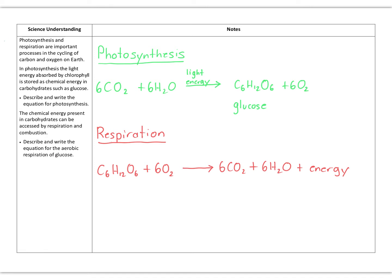Hopefully you've all learnt this somewhere in your science education, either in middle school science or biology. Photosynthesis is what happens in the leaves of plants. They take in carbon dioxide from the atmosphere and water from the roots, and with an input of energy in the form of light from sunlight, that converts into glucose and oxygen. This releases oxygen back into the atmosphere, using up carbon dioxide to stop it building up — very important in terms of global warming.